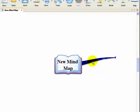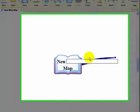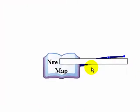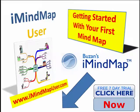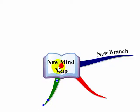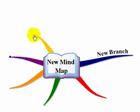Now, to annotate this and put a keyword on there, we simply double click and this text box appears. We write 'new branch' or whatever it is we want to go on there, and there it is. We simply do the same thing with all these other branches. It's very, very easy to create new branches.